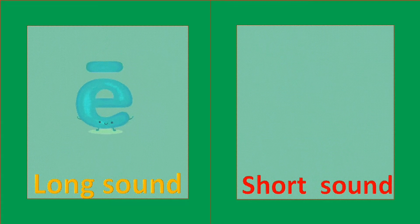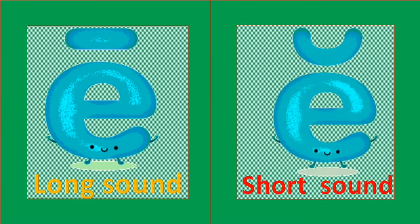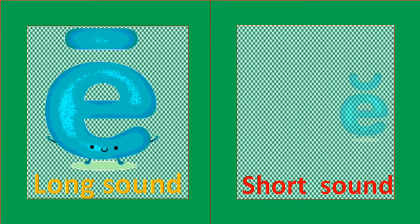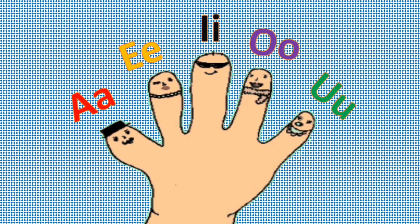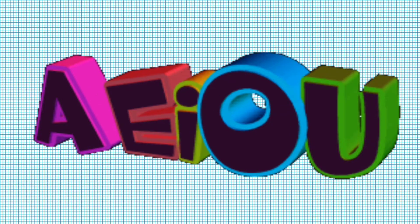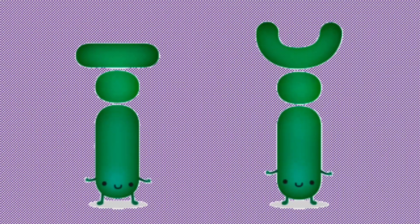Here is E. There is A. Here is E. There is A. Here we have five vowels: A, E, I, O, U. Meet I.